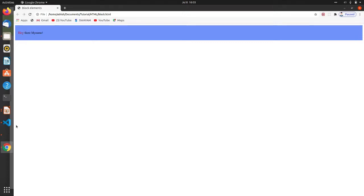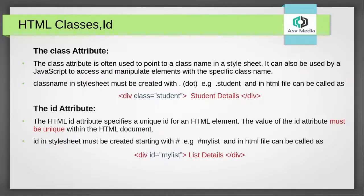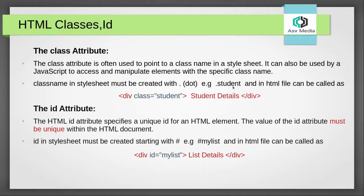The next part is HTML classes and ID. The class attribute is often used to point to a class name in a CSS style sheet, and it can also be used by JavaScript to access and manipulate elements with a specific class name. In a style sheet, the class name must be created with a dot — for example, dot student. In the HTML file you can call this class inside a div element using the class attribute: class equal to 'student'.